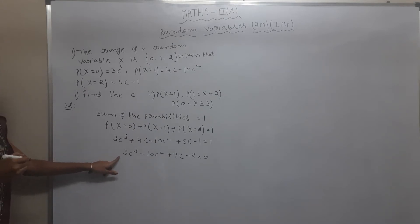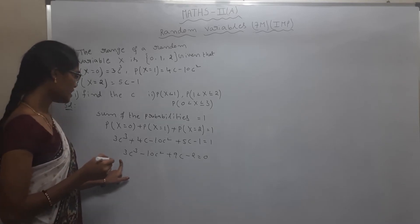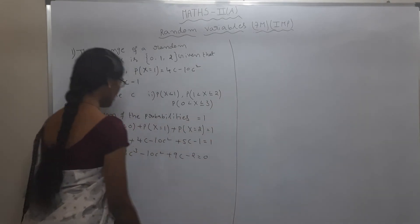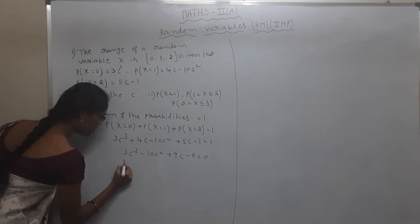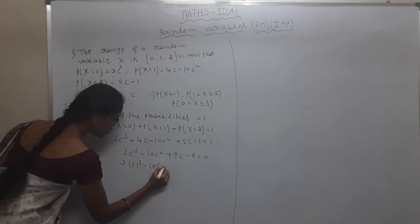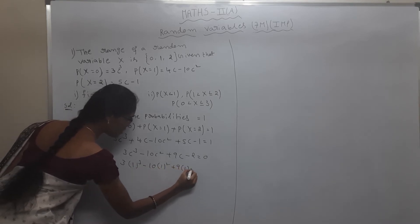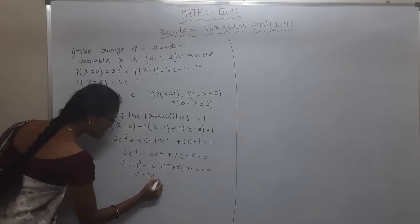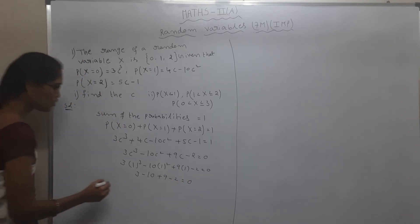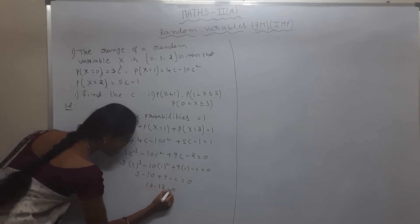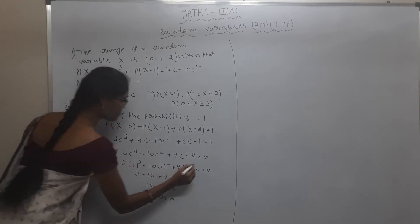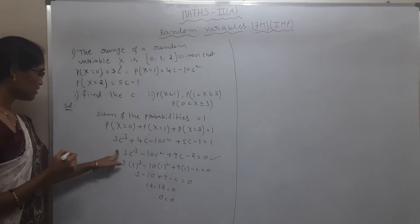Since fractions are not immediately obvious, we check by trial and error method. Check c = 1: 1³ - 10(1²) + 9(1) - 2 = 1 - 10 + 9 - 2 = 0. So c = 1 is a factor.